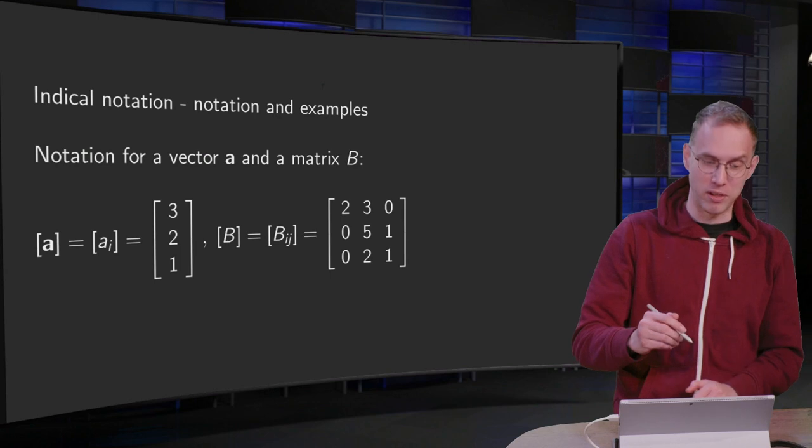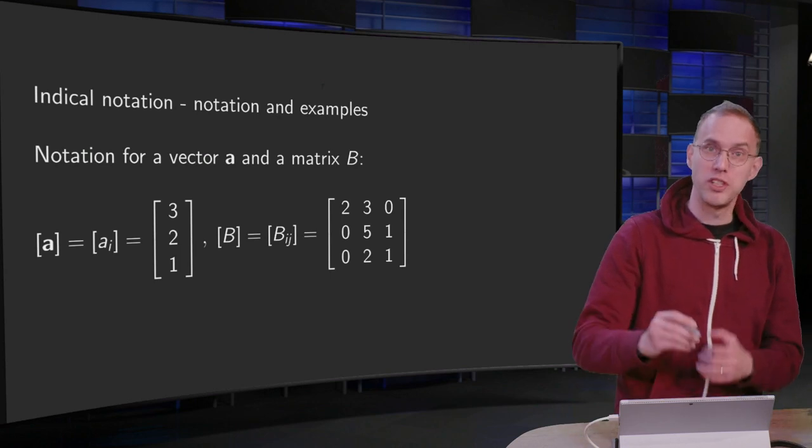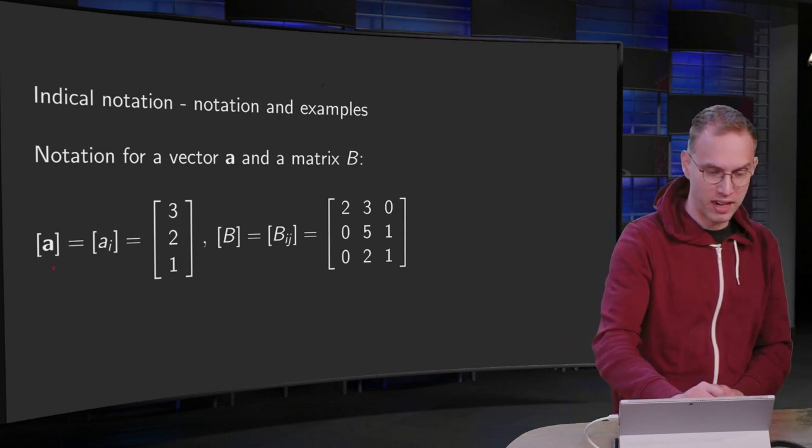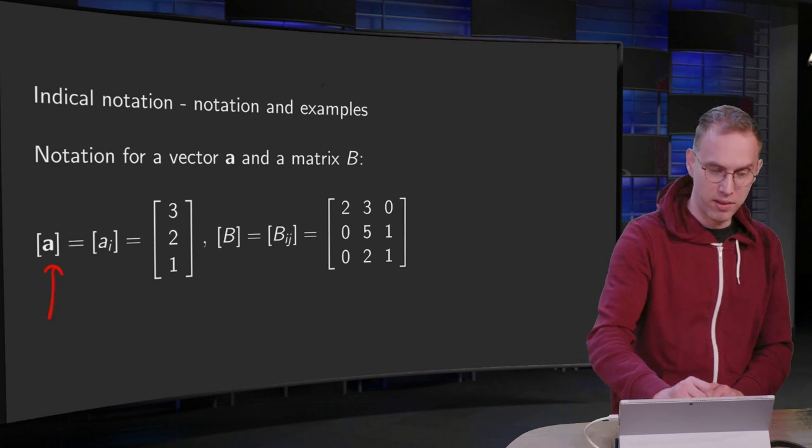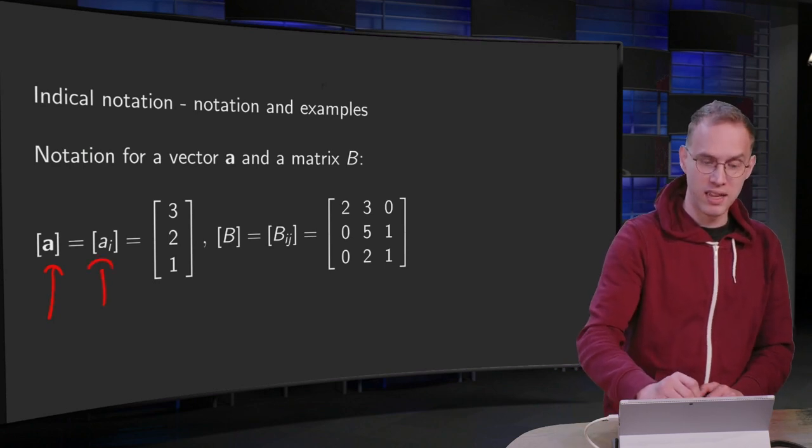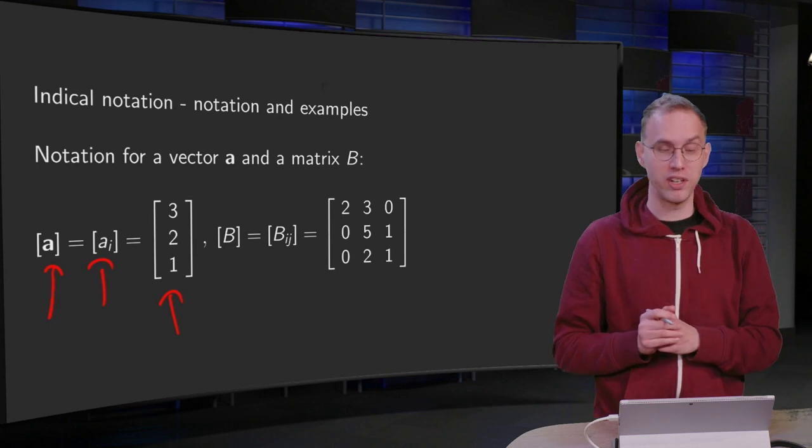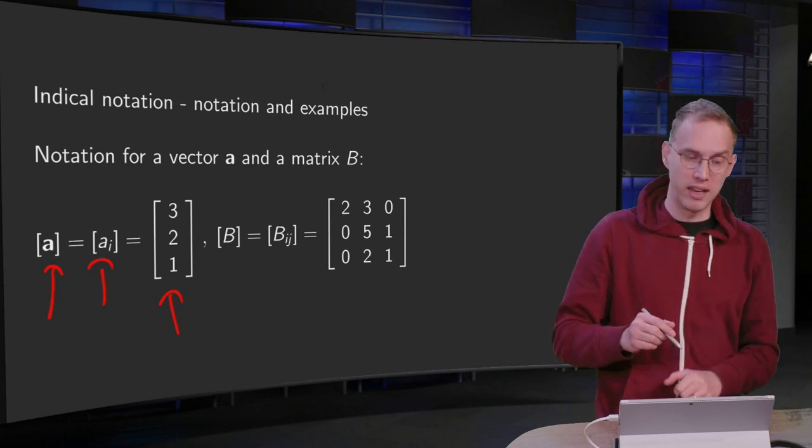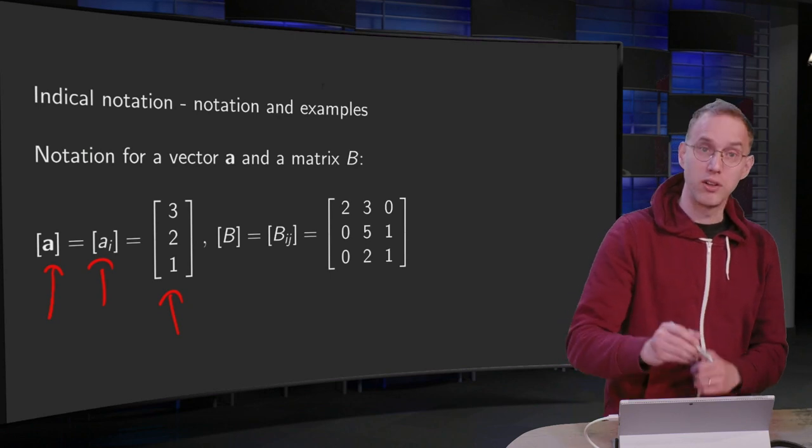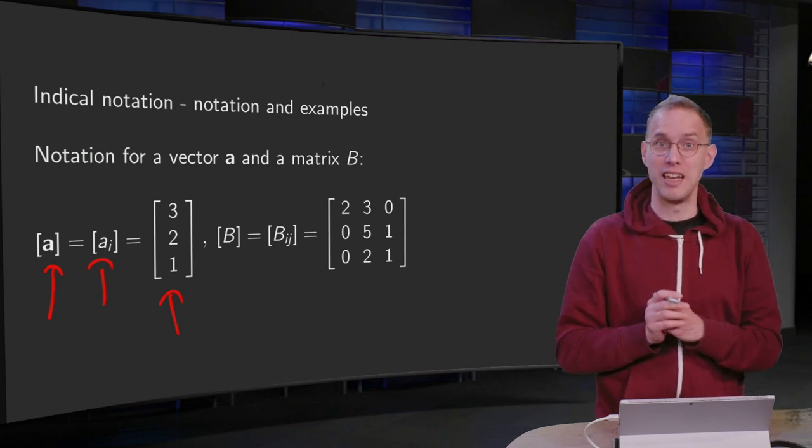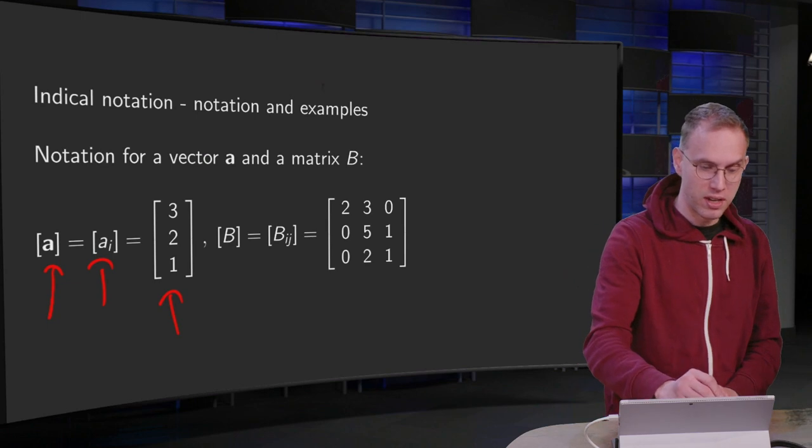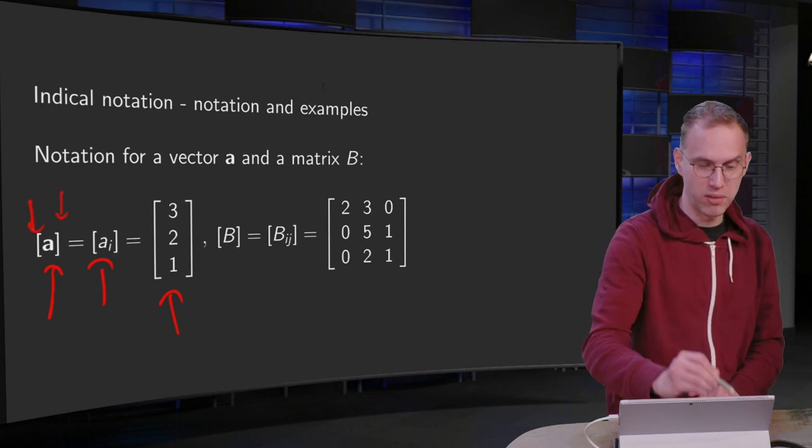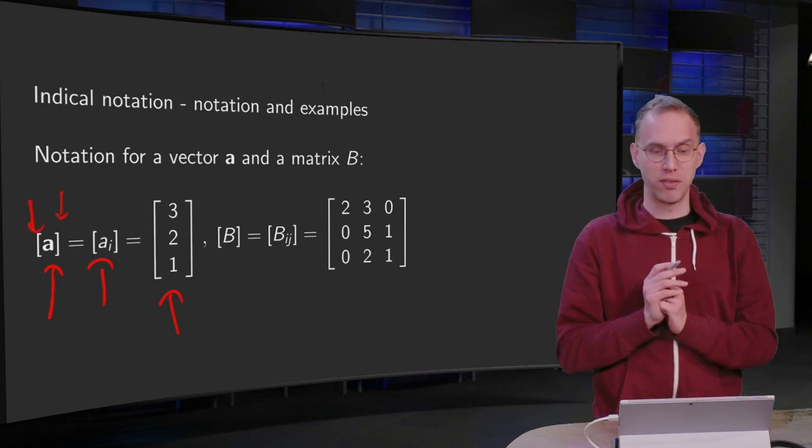So what about the ai? We see them as components of a vector a. We call those components ai, and then we can put them in a vector, so a1 equals 3, a2 equals 2, and a3 equals 1 in this case. Notice that we write the components of the vector a with respect to the standard basis, and we put those brackets around. That's a bit different from linear algebra.